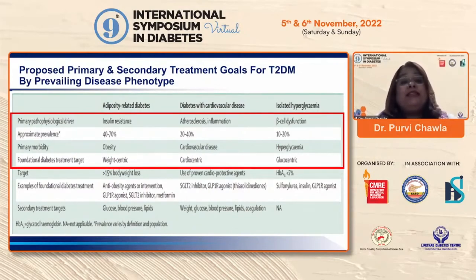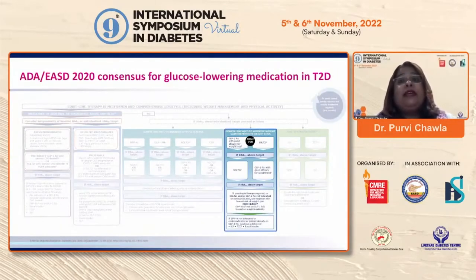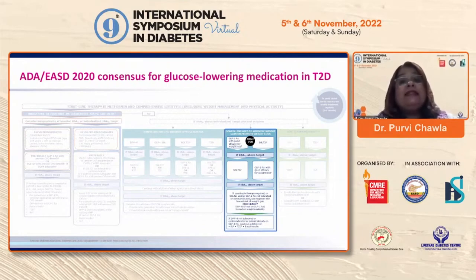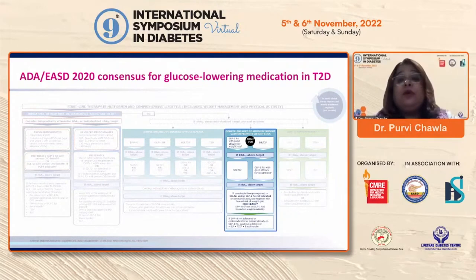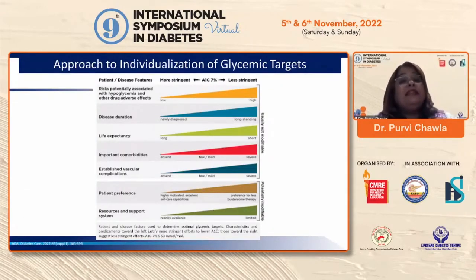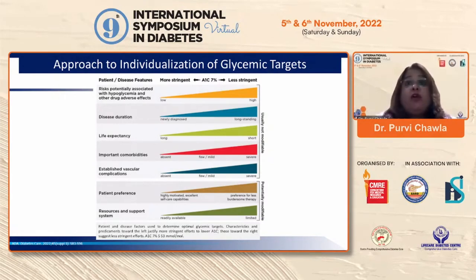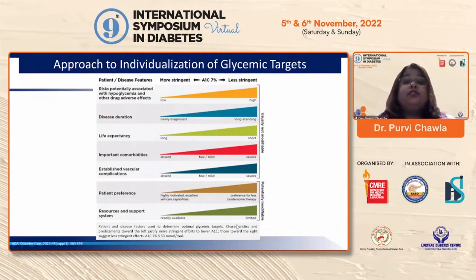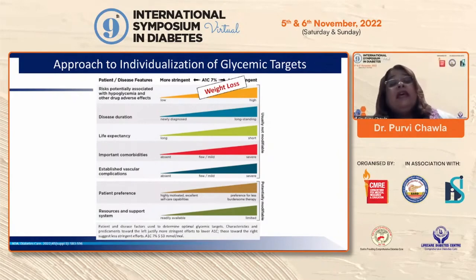The consensus for glucose-lowering medications in type 2 diabetes has always focused on comorbidities to prioritize drug therapy offering cardiorenal protection. But these same drugs are also to be preferentially used when it comes to causing weight loss or preventing weight gain. Patient and disease factors determine optimal glycemic targets — more stringent on one end, less stringent on the other — but once weight loss is achieved, all these targets can be optimized.